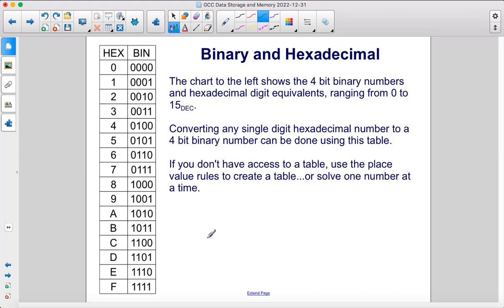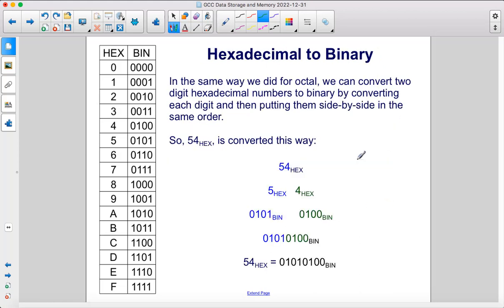Converting any single-digit hexadecimal number to a 4-bit binary number can be done using this table. If you don't have access to a table, use the place value rules to create a table, or solve one number at a time. In the same way we did for octal, we can convert two-digit hexadecimal numbers to binary by converting each digit and then putting them side by side in the same order. So let's convert 54 in hexadecimal to binary. We just split it up, 5 and 4. We look at our table, 5 in hexadecimal is 0101 in binary. We do the same thing for the 4, and then we just put the numbers back together.